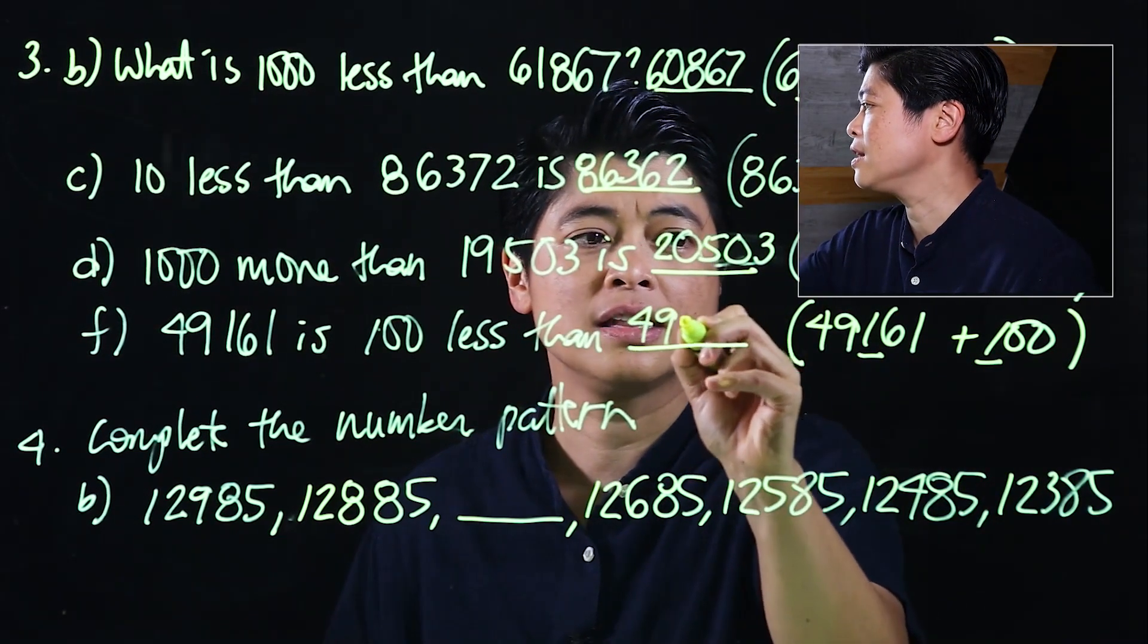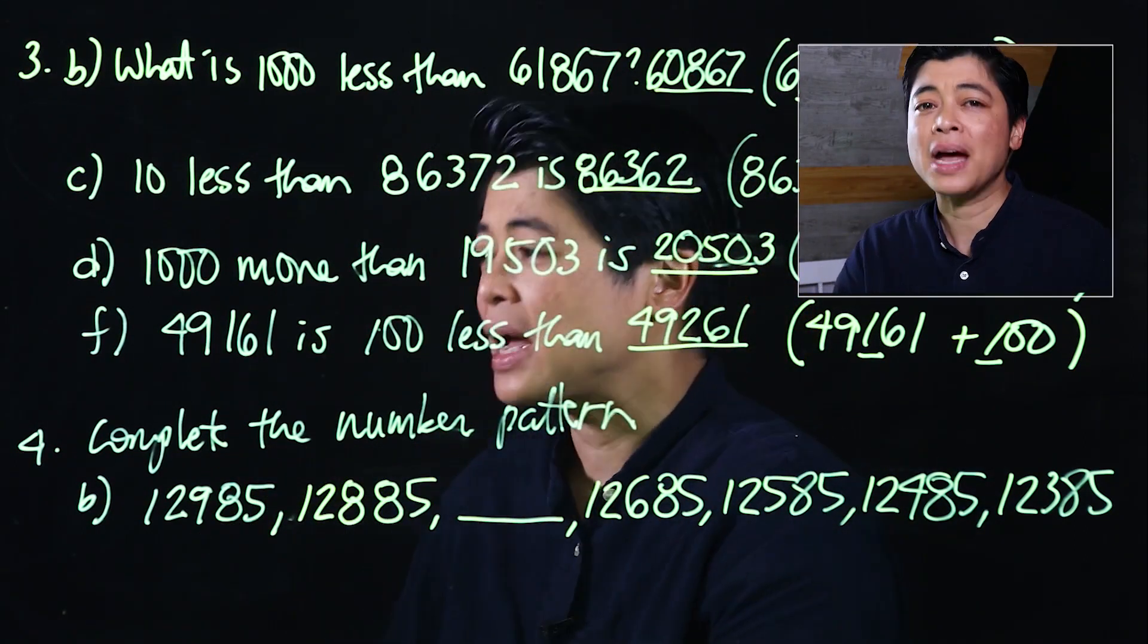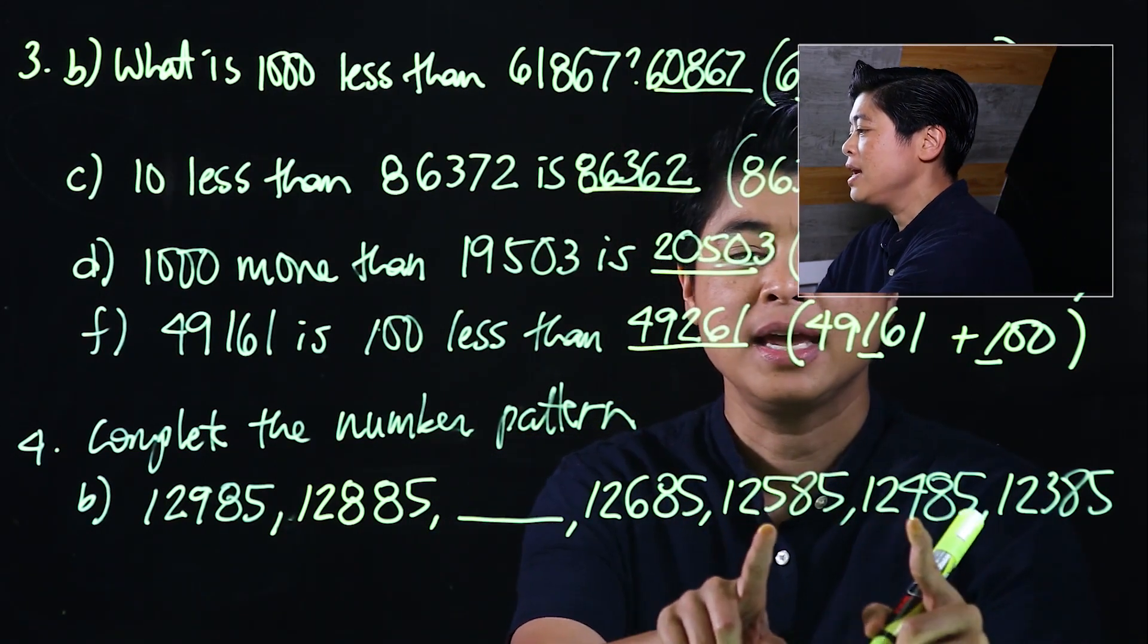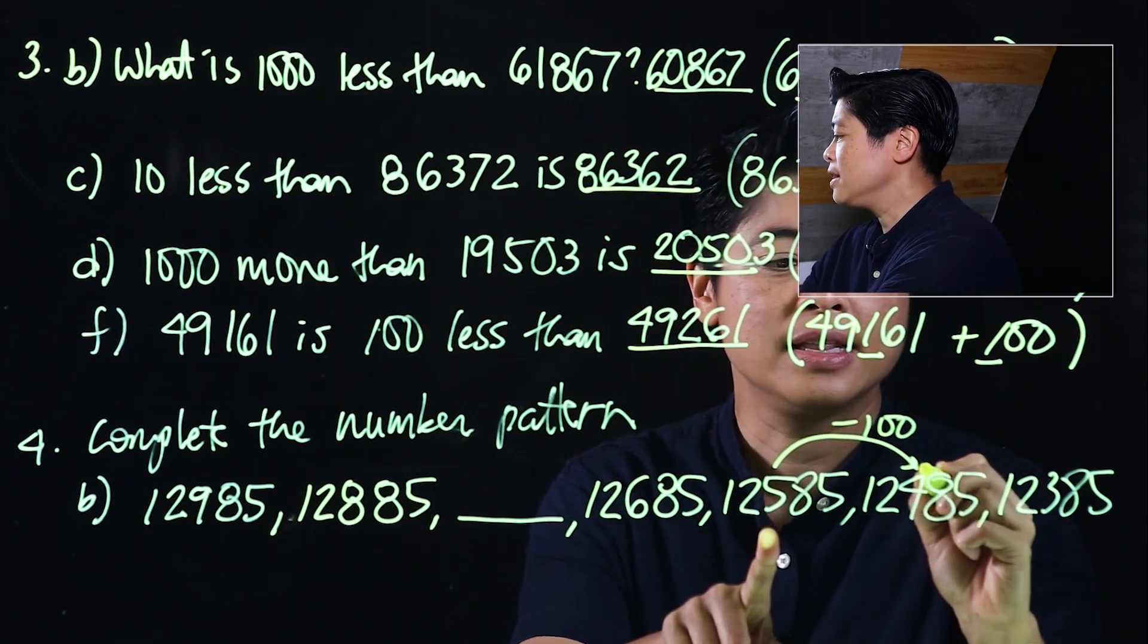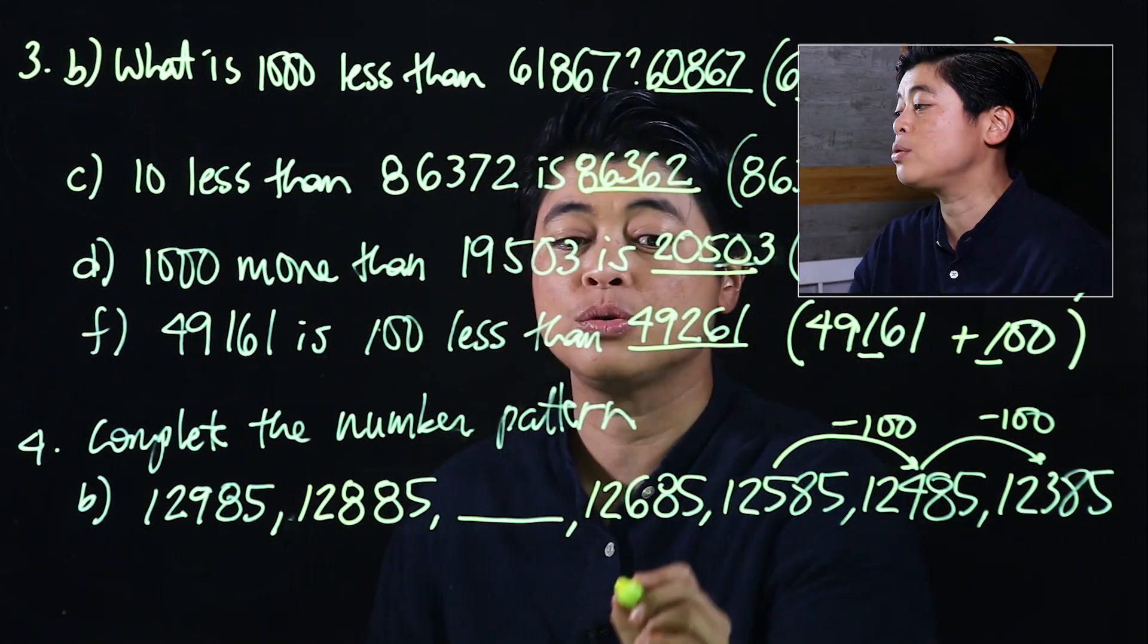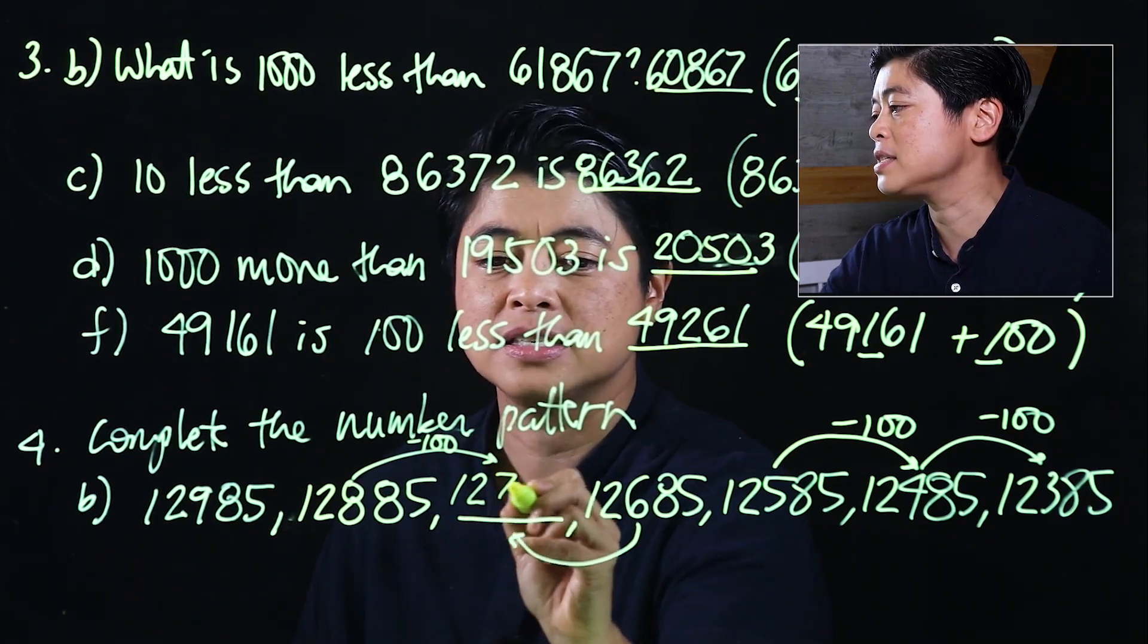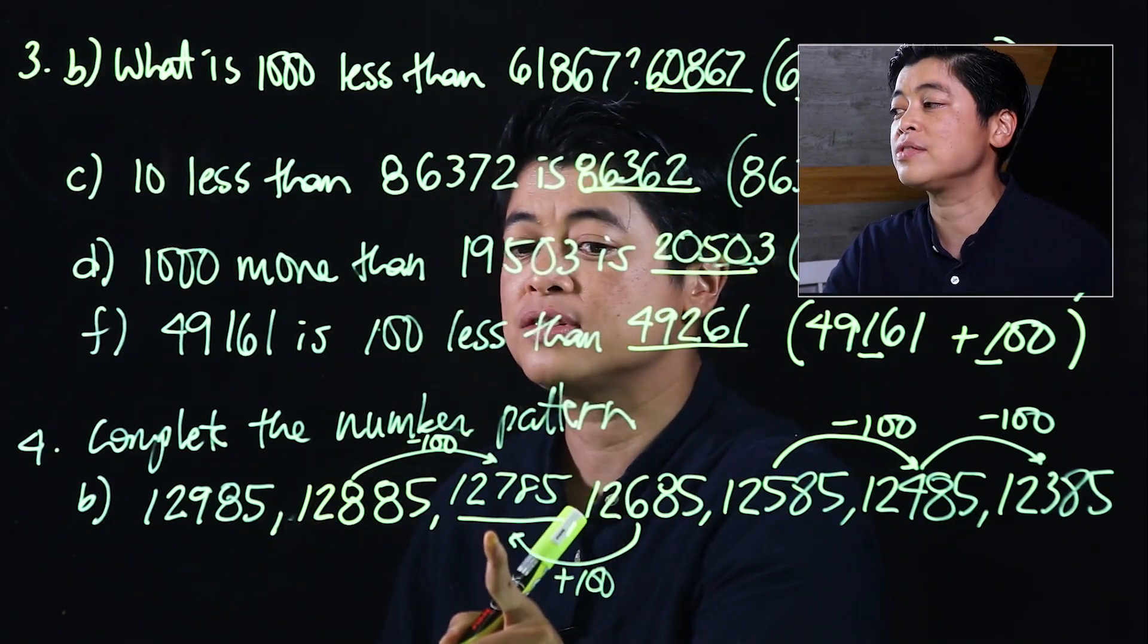Finally, it says complete the number pattern. Since what's missing is in the beginning, we start by looking at the patterns in the end. You'll notice the hundreds place changes—this is minus 100, this is minus 100. There's two ways of doing this: if we work back we need to add, or we can continue with the pattern and minus 100. Either way gives us 12,785.